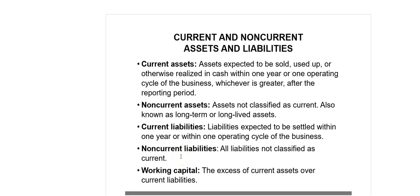Non-current liabilities, or long-term liabilities, are those liabilities not classified as current, including long-term debt, loans from banks, bonds issued, etc. Working capital is the excess of current assets over current liabilities — that is, current assets minus current liabilities — generally known as net working capital.